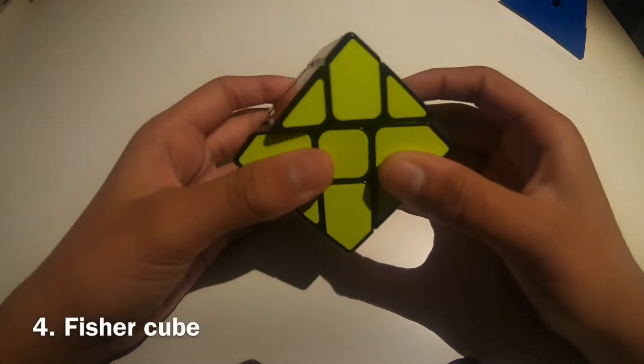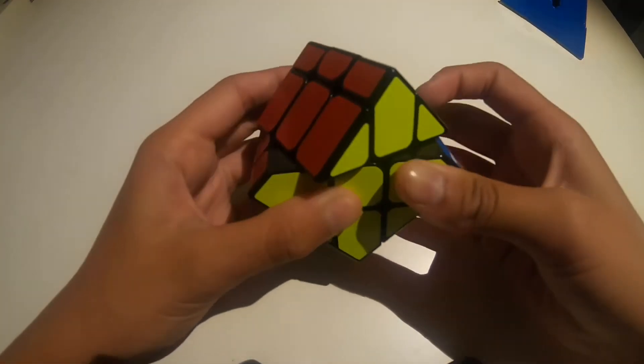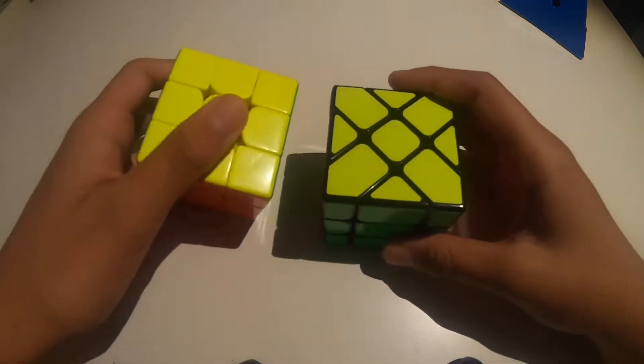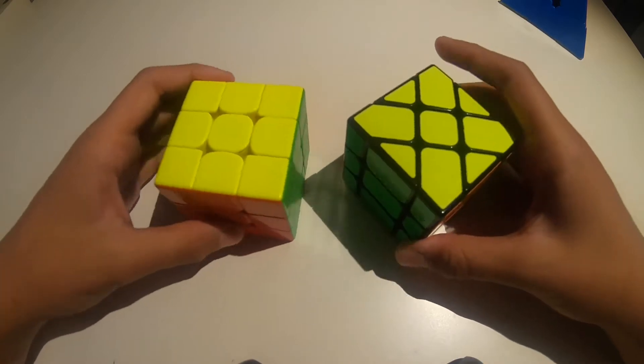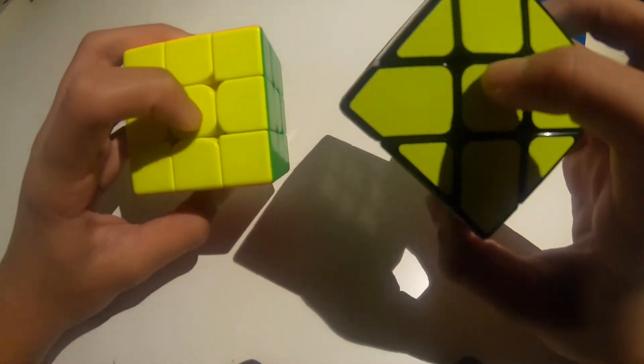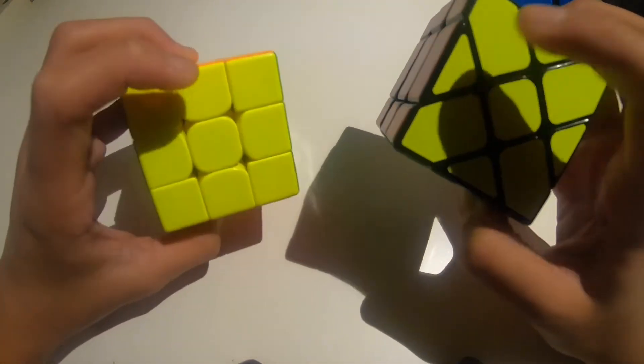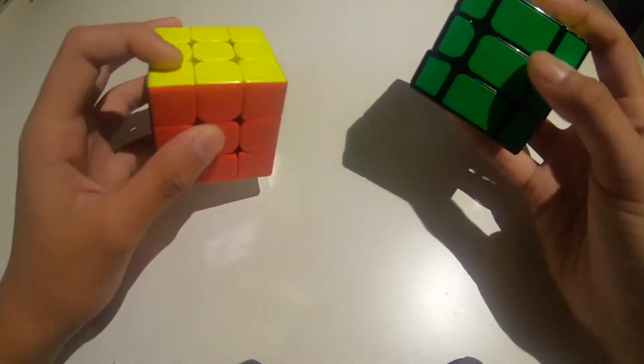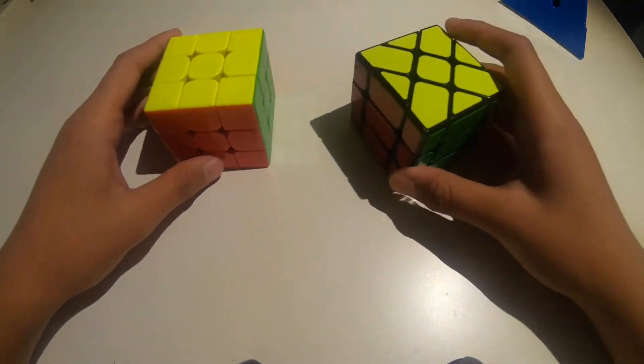Alright, so next up we have the fish cube. Now, in case you didn't know, this is a 3x3 shape mod. So if I put it like this, this is the center, these are the corners, edges, corner, edge, center, edge. And it's basically a 3x3 shape mod.